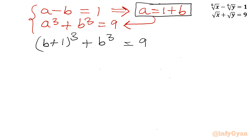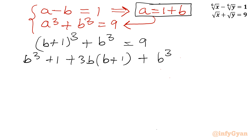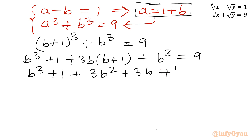Applying the (a+b)³ formula: (b+1)³ plus b³ equals 9. Expanding gives b³ plus 1 plus 3b² plus 3b, plus b³, equal to 9.